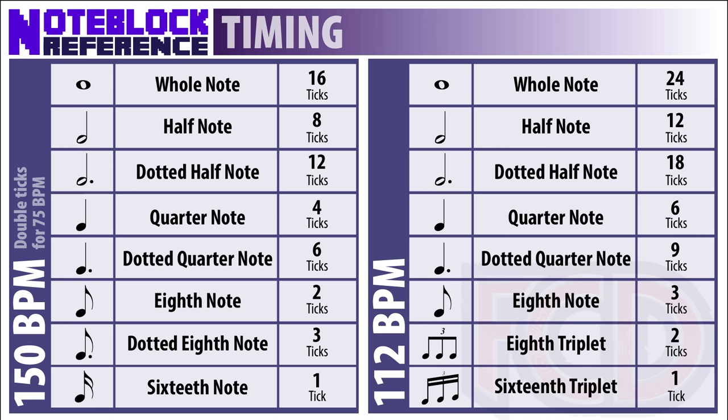150 BPM is a bit fast for most songs. You could also double the length of the ticks, but that'll get you 75 beats per minute, which is particularly slow. There is a way to get close to the typical 120 beats per minute that most pop songs use, but that requires you to sacrifice sixteenth notes. The sad truth is it's not always going to be possible to get the right speed for every song. Also, in the rare case that you might need triplets, those are available at 112 BPM — so you lose your sixteenth notes, but you get triplets.